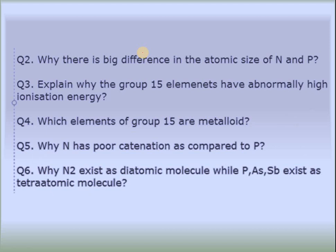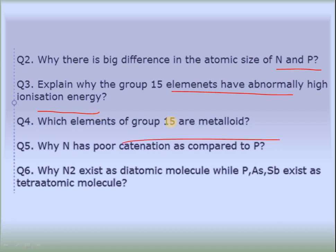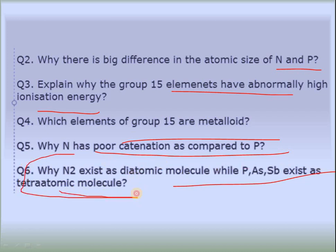Some other questions you can answer from previous lectures include: why is there a big size difference between nitrogen and phosphorus? Why is there an abnormally high ionization enthalpy in group 15? Which elements of group 15 are metalloids? Why does nitrogen have poor catenation compared to phosphorus? Why does N₂ exist as a diatomic molecule while phosphorus, arsenic, and antimony exist as tetra-atomic molecules?